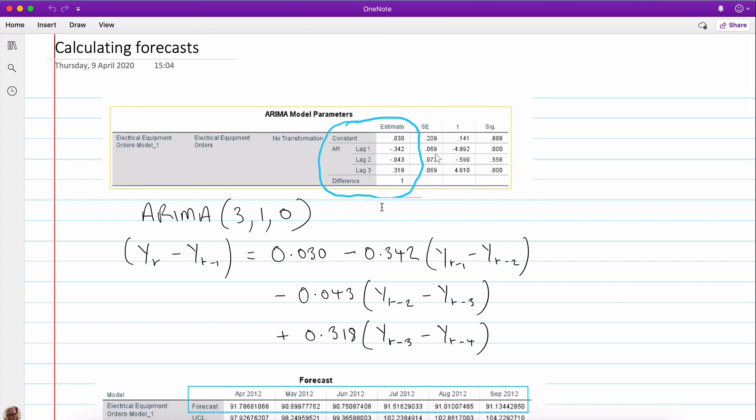Now remember we had to first difference in order to make the data stationary, so that's why we have a one here of course. As you can see we had three autoregressive lags, no moving average, so it was an ARIMA(3,1,0).